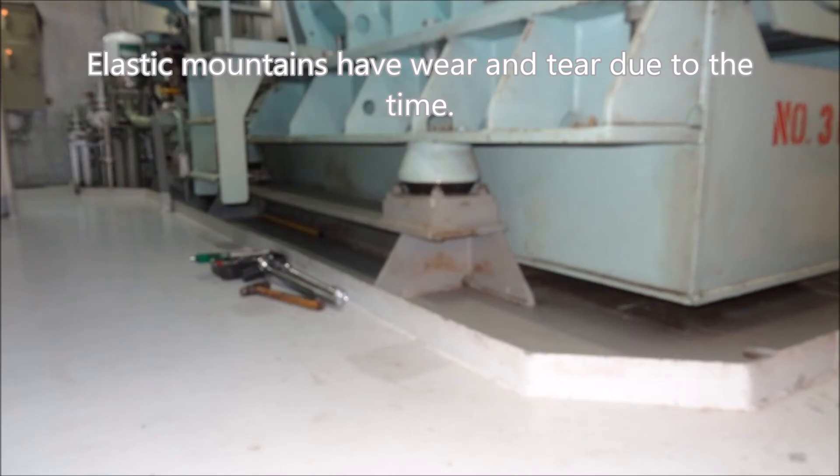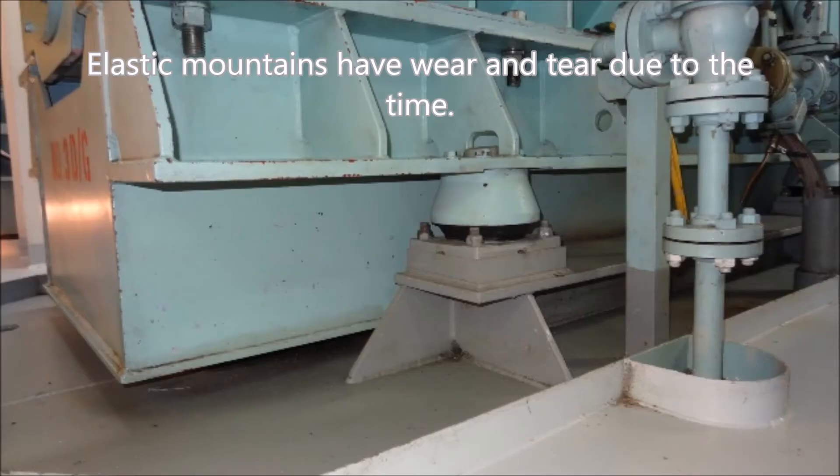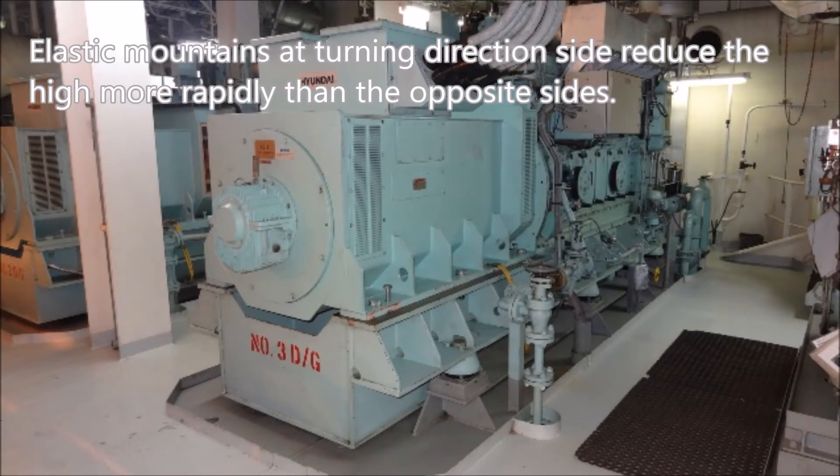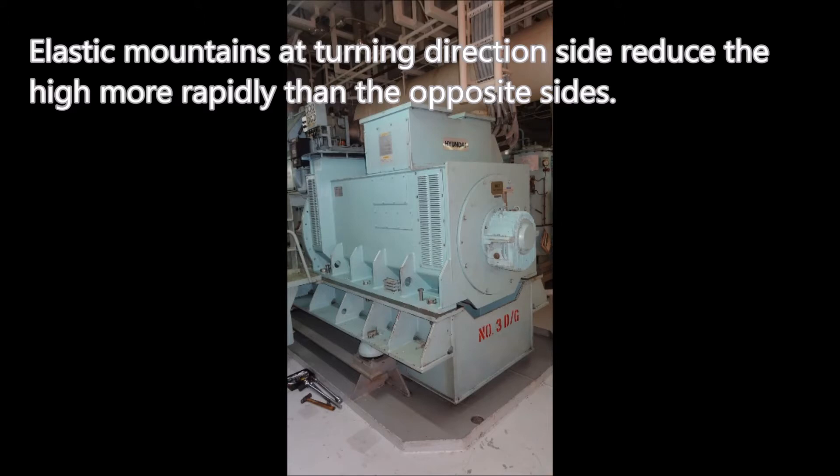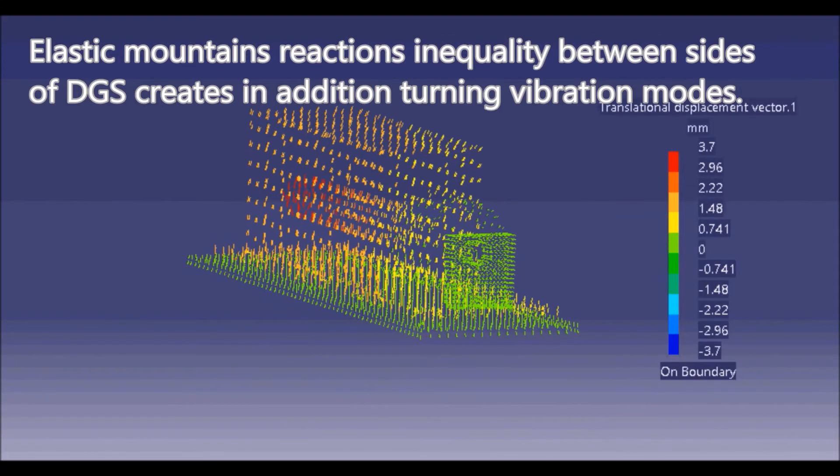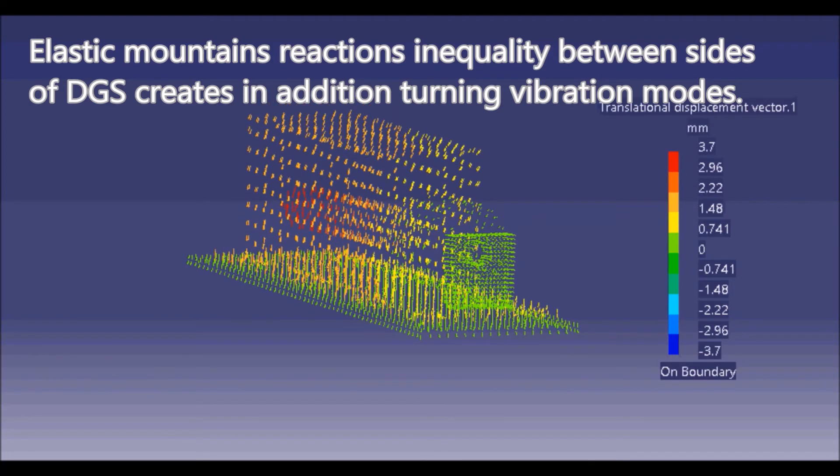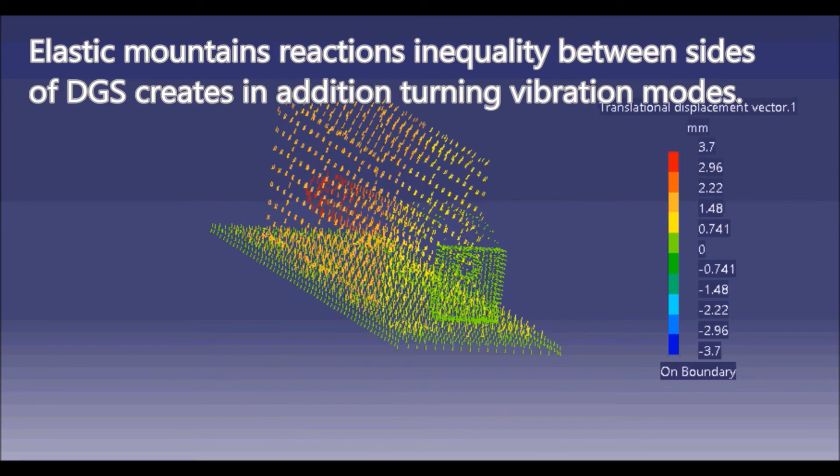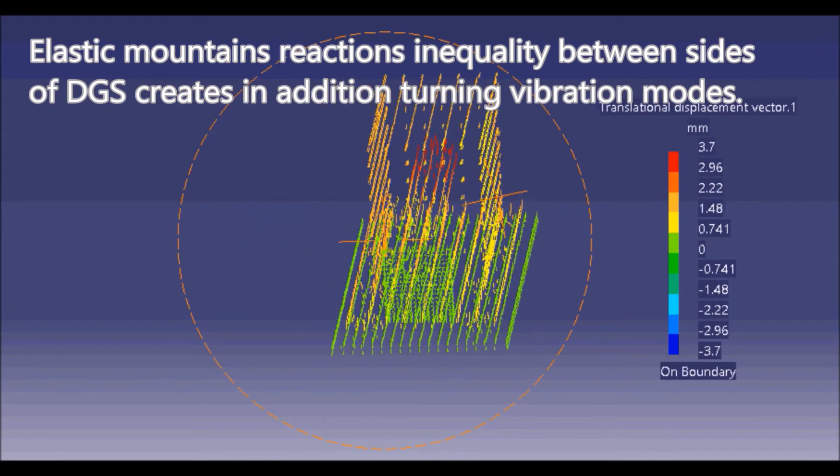Elastic mountings have wear and tear due to time. Elastic mountings at the turning direction side reduce in height more rapidly than the opposite sides. Elastic mounting reaction inequality between sides of DGS creates in addition turning vibration modes.